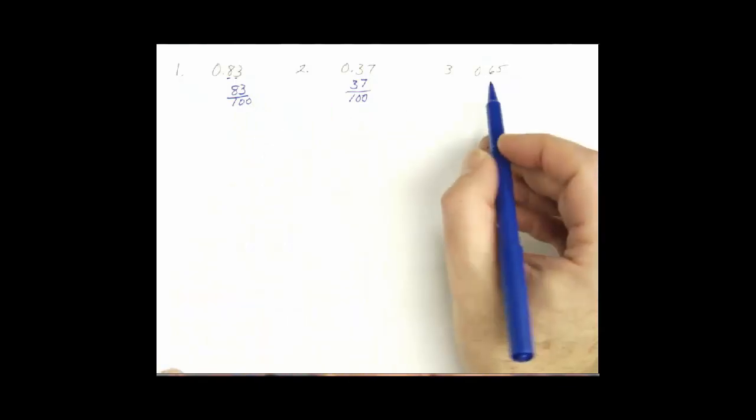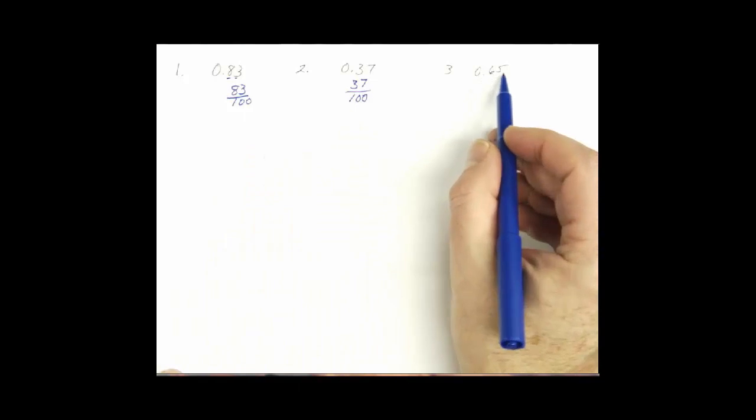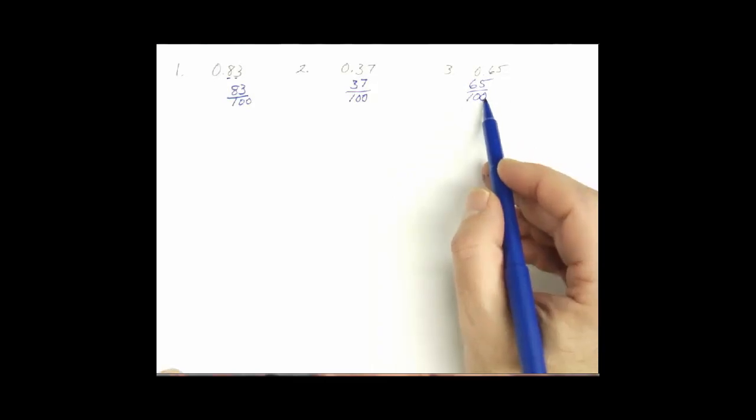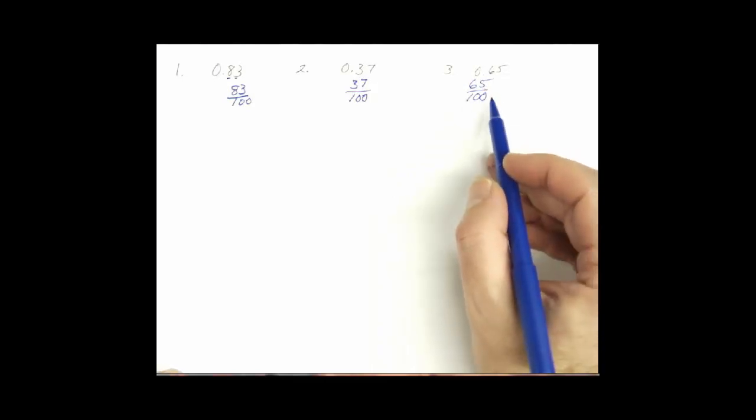In problem number 3 though, we can. We have 0.65 and that's going to become 65 hundredths. But you'll notice they both end with either a 0 or a 5. So using our rules that we learned in chapter 3, we can then go ahead and reduce that by 5.